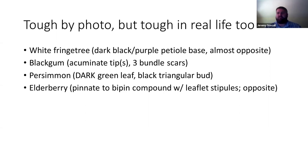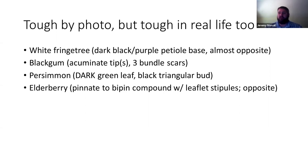Elderberry seems to have given people a lot of trouble by photos. It's a pinnate to bipinnately compound leaf. What you want to look for: elderberry has little projection-like stipules at each leaflet joining the rachis, not just at where the whole leaf joins the twig. Those look like a little nub on a Nerf toy sticking out at each leaflet. Elderberry is opposite and pinnately compound. For opposite compound leaves, you're trying to tell elderberry, red buckeye, and box elder apart if it's not an ash. Red buckeye has palmately compound leaves with five or more leaflets. Box elder kind of looks like poison ivy.